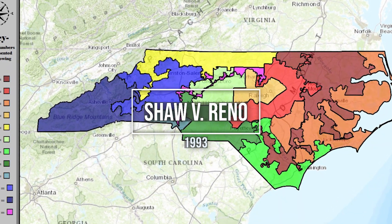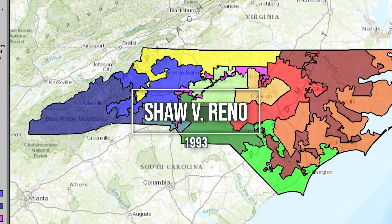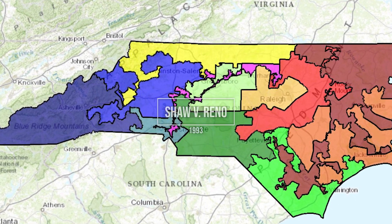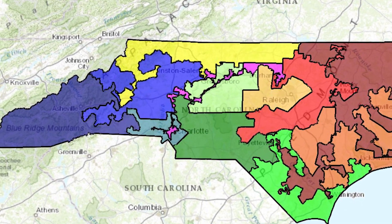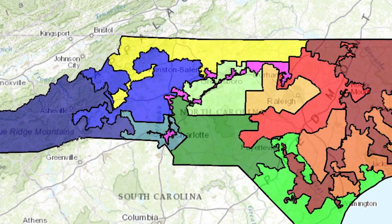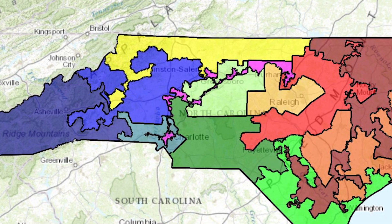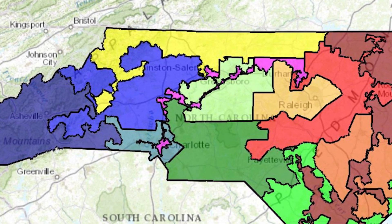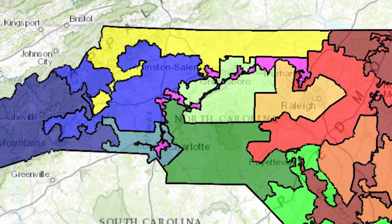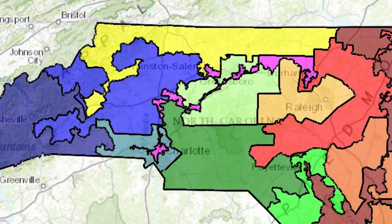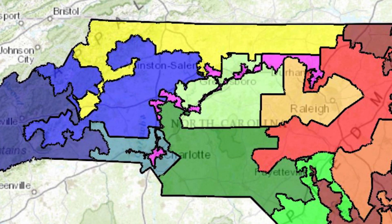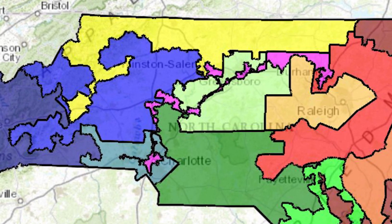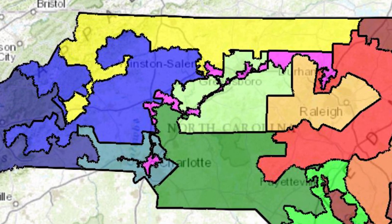Shaw v. Reno was a landmark case that was decided by the Supreme Court of the U.S. in 1993. The case challenged the constitutionality of a North Carolina congressional redistricting plan that had been designed to create a majority-minority district. The court's ruling had significant implications for the use of race in redistricting and paved the way for future challenges to racial gerrymandering.